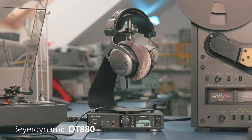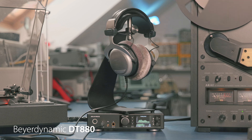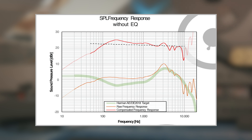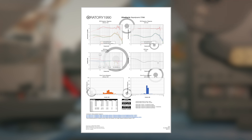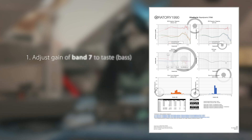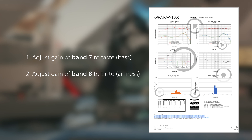Our second example is also very popular: the Beyerdynamic DT 880. Again, an open design with some lack in bass, but also known for peaky treble. The measured frequency response clearly shows the famous 'Beyer Peak' at around 6kHz. The rest is quite similar to the HD 650. Looking at the filter table, band 5 dials down treble at 5.9kHz by 7dB. While most of the information we gave for the HD 650 also applies to the DT 880, note the extended comments in the lower right of the PDF. As with the Sennheiser HD 650, bands 7 and 8 are used again to match your personal preference in bass and treble — with treble wonderfully described as 'airiness'.